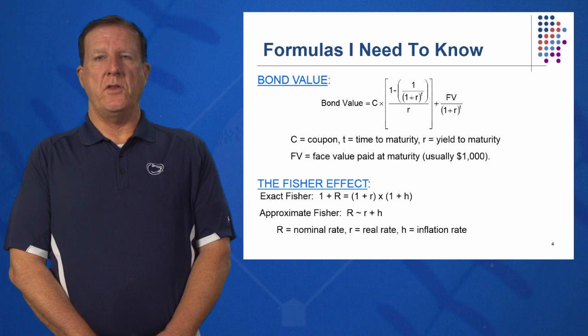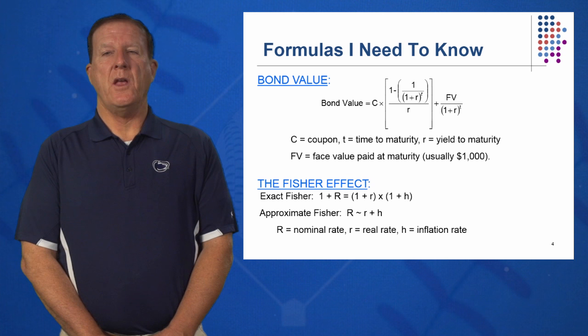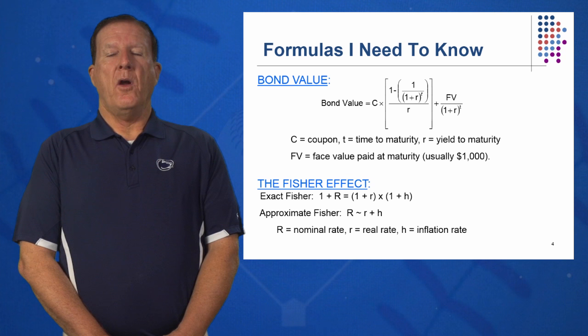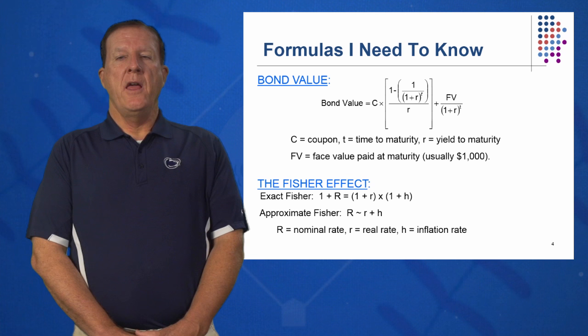The bond value today — present value or price of the bond — is equal to the present value of the coupons plus the present value of the face. We're going to learn a complete new language with bonds, so it's very important to pay attention and get some basic concepts down. We're also going to discuss the Fisher Effect, postulated by Dr. Irving Fisher, that total returns are composed of real returns plus inflation.